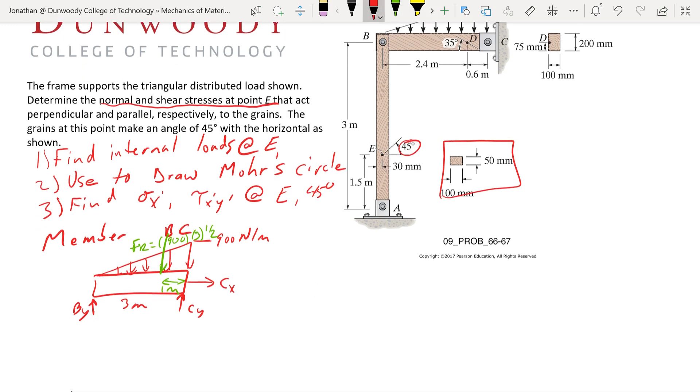Using that information, we need to find By, so we're going to do our moments around C. We have this positive moment, 900 times 3, 1 half, that's our load in newtons, acting at 1 meter away. And then we're going to have minus 3By equals 0. So By is going to be 450 newtons.